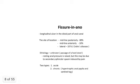Moving to more benign and common conditions — fissure in ano is a longitudinal ulcer in the distal part of the anal canal. The site is usually midline posteriorly (80% of cases), midline anteriorly in 10%, and lateral in Crohn's disease. The etiology is mostly unknown but can be caused by passing of hard stools, which is a mechanical cause of the ulcer. The resting anal pressure is raised, possibly due to secondary sphincter spasm induced by pain.